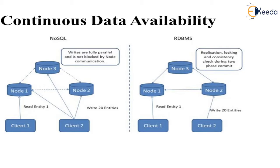NoSQL provides continuous data availability, whereas RDBMS provides limited availability and blocks data many a time because it has locking mechanisms and consistency checking during two-phase commits. When using NoSQL, it executes parallelly, stores information parallelly, and is not blocked during node communication.